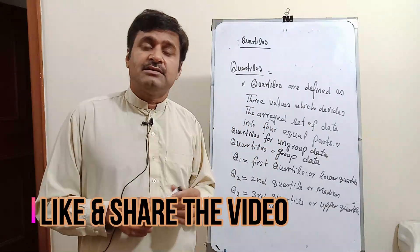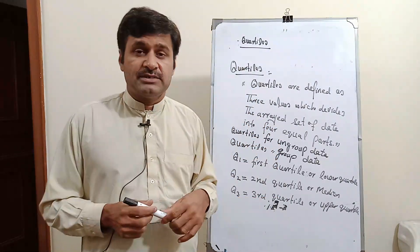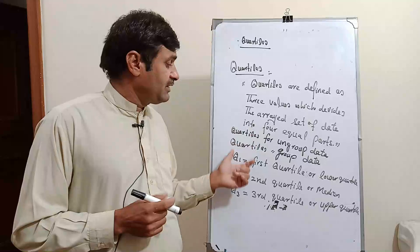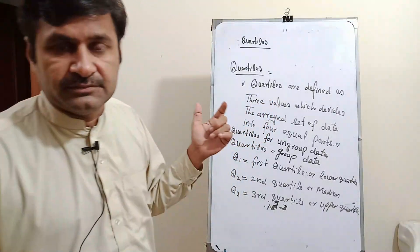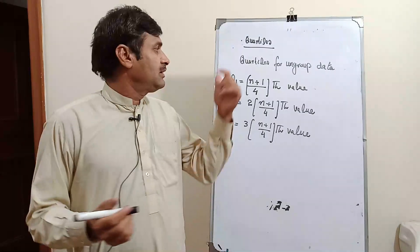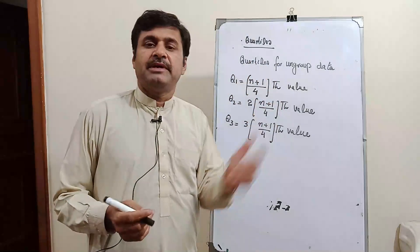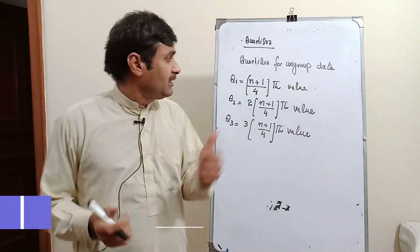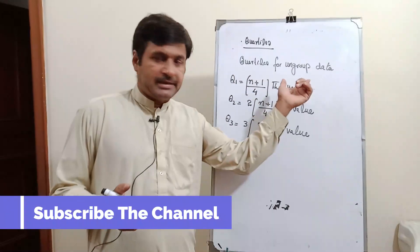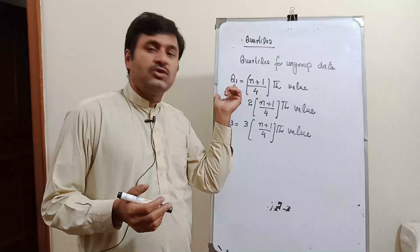There are two types of quartiles: first, quartiles for ungrouped data, and second, quartiles for grouped data. First of all, we discuss quartiles for ungrouped data through formulas and examples.